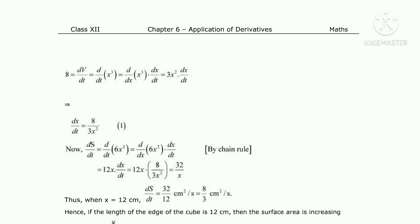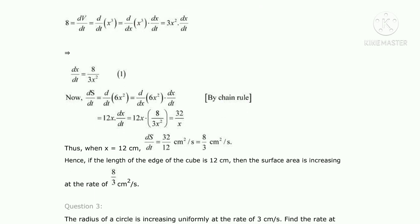The edge is given as 12 centimeter, so we substitute x equals 12. Then dS/dt equals 32/12 centimeter square per second, which simplifies to 8/3 centimeter square per second. Hence when the length of the edge of the cube is 12 centimeter, the surface area is increasing at the rate of 8/3 centimeter square per second.